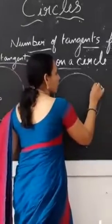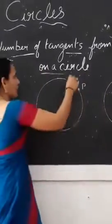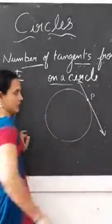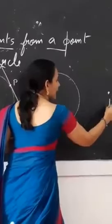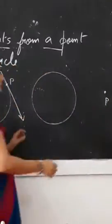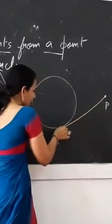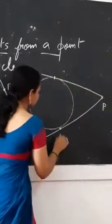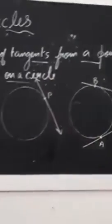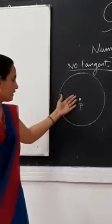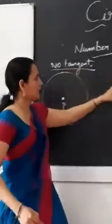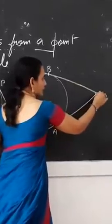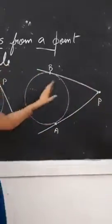If a point P lies on the circle, only one tangent can be drawn. If a point P lies outside the circle, we can draw two tangents from that external point P. Let us name them PA and PB. So: no tangent if inside, one tangent if on the circle, and two tangents if outside the circle.